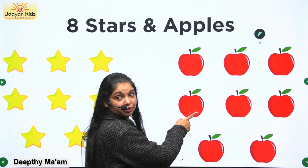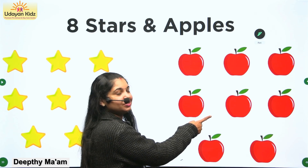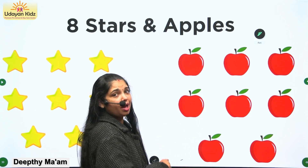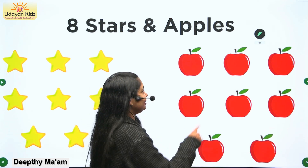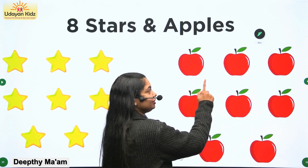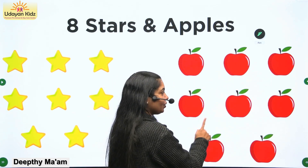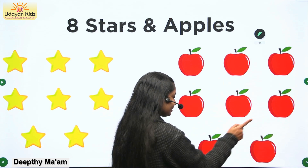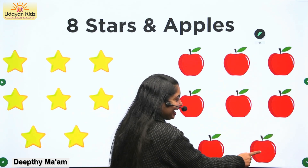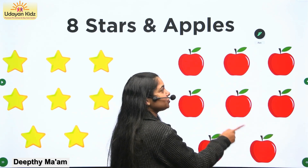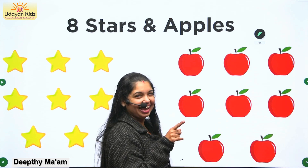And what are these? These are apples. So how many apples are there? Let's count the apples. One, two, three, four, five, six, seven, eight apples. Very good. How many apples are there? Eight apples.